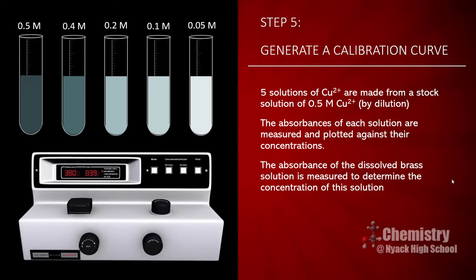We will then make five standard solutions of copper 2+ ions — 0.5, 0.4, 0.2, 0.1, and 0.05 molar — and we'll measure the absorbances of each solution. The purpose of this is to create a calibration curve from which we'll be able to determine the concentration of our dissolved brass solution.